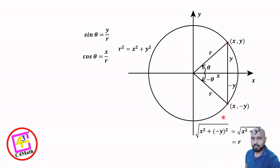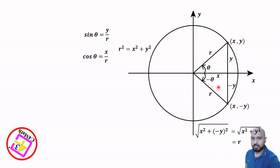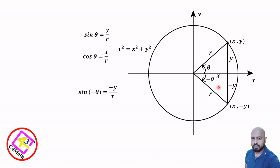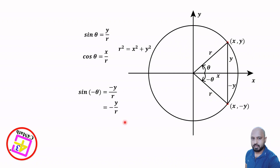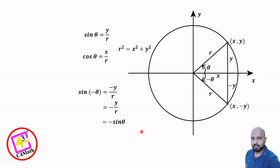In this reflected triangle, one side is x, the other side is negative y, and the hypotenuse is r. We can now find sin(negative theta). Sin(negative theta) equals opposite side over hypotenuse, which is negative y over r. We know y over r equals sin theta. Therefore, sin(negative theta) equals negative sin theta. That is the first relation.